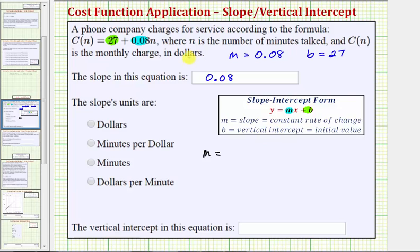In our case, notice how the outputs are C of n, which is the monthly charge in dollars, and the inputs are n, which equal the number of minutes talked.